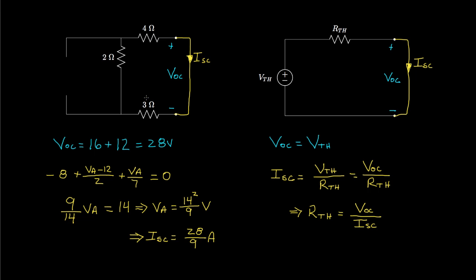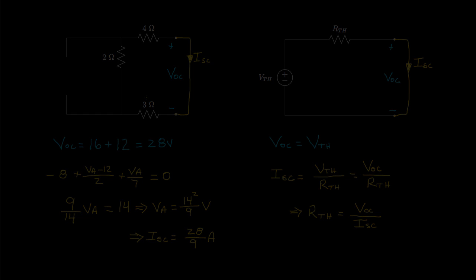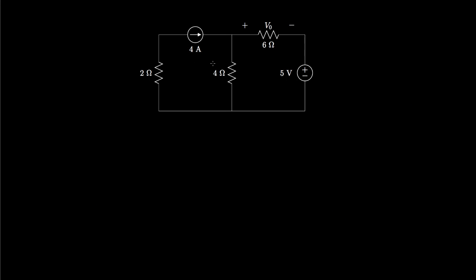Let's take a look at another example and see if we can apply the Thevenin theorem to simplify circuit analysis. We have three resistors, a 4-amp current source, and a 5-volt voltage source, and we'd like to determine VO, the voltage across the 6-ohm resistor. We could use nodal analysis, labeling node VA and writing Kirchhoff's current law equations, but let's use the Thevenin theorem instead.